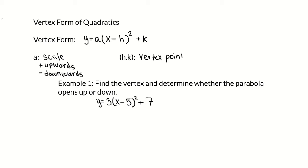For example, find the vertex and determine whether the parabola opens up or down for the equation y equals 3 times x minus 5 squared plus 7. The a value is 3. Since a equals 3 and 3 is a positive number, this parabola opens upwards.